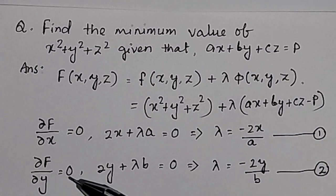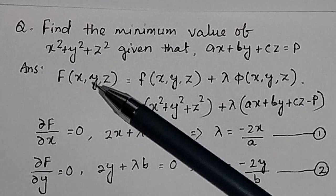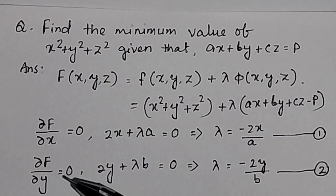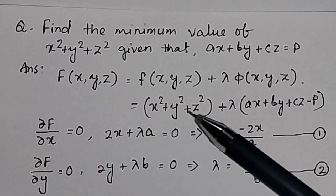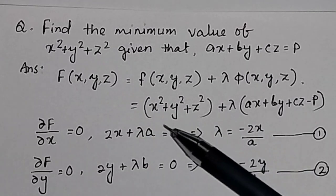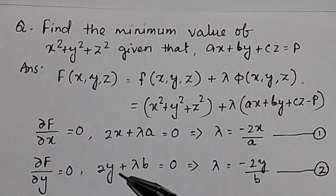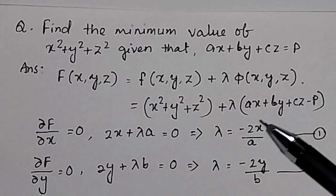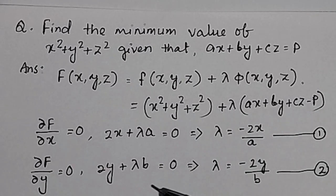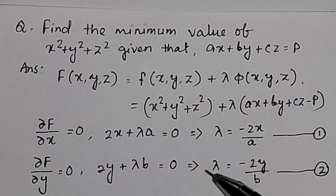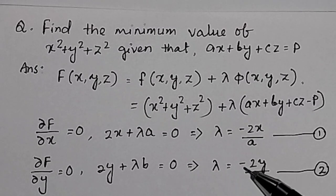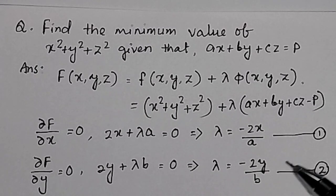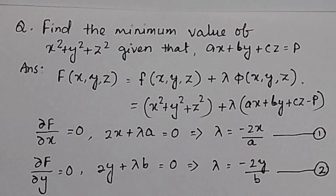Similarly, when we find the partial derivative of this function with respect to y and set it to 0, the partial derivative with respect to y gives 2y, and for the constraint it gives λb. So 2y + λb = 0, which means λ = -2y/b. This is equation number 2.